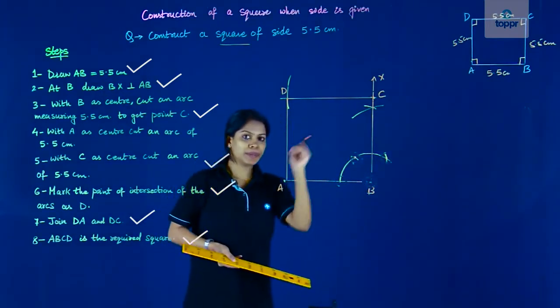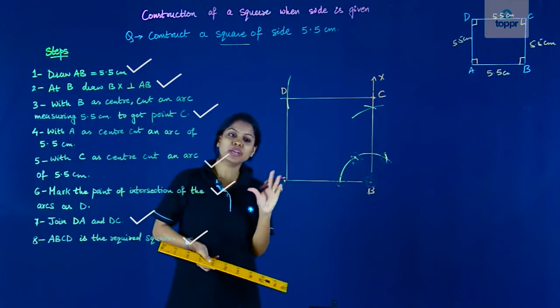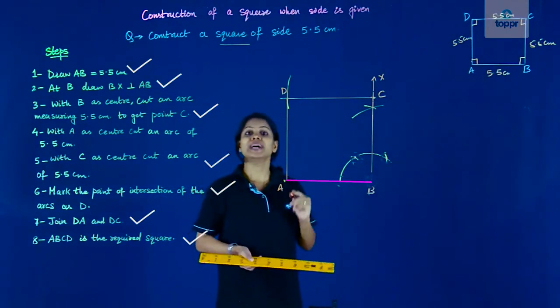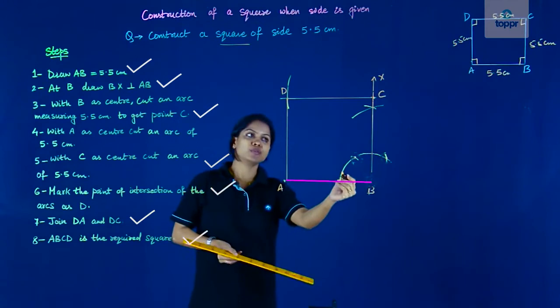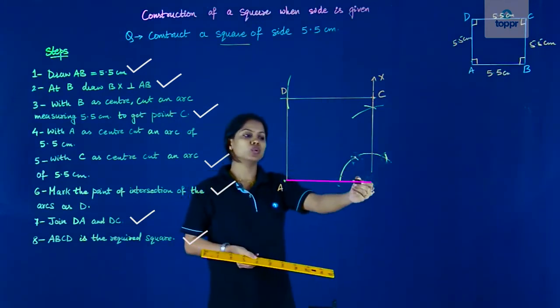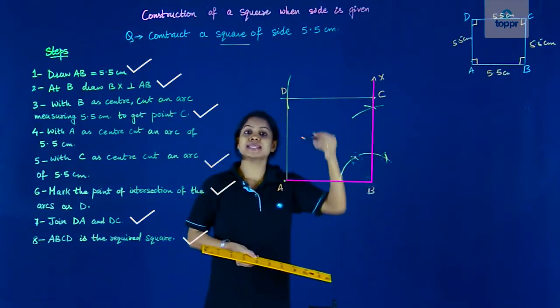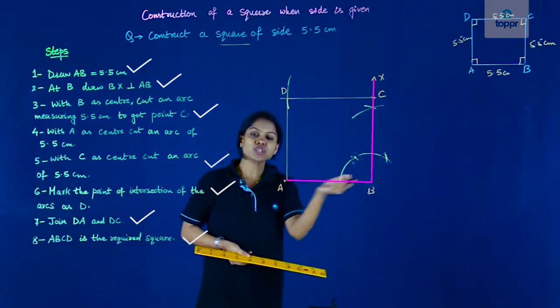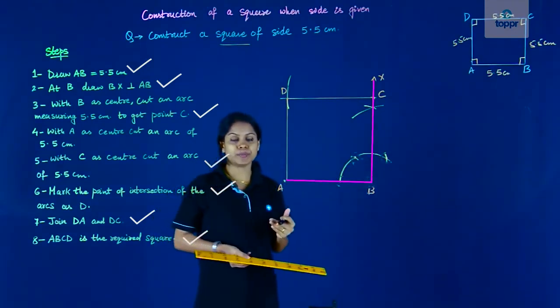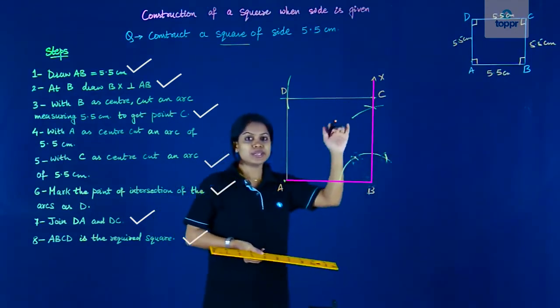We started with the base. We started by drawing AB as 5.5 centimeters first, and then at the point B we drew a perpendicular. So we drew ray BX such that the ray BX is perpendicular to the base AB. And then to locate C,